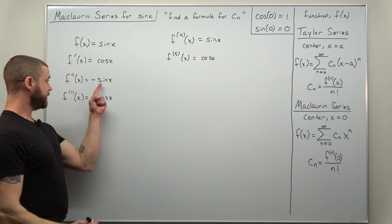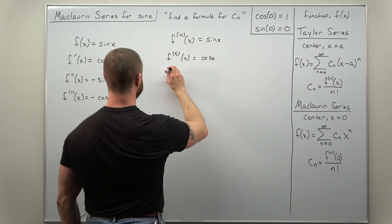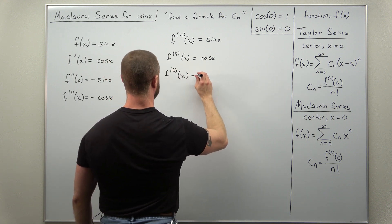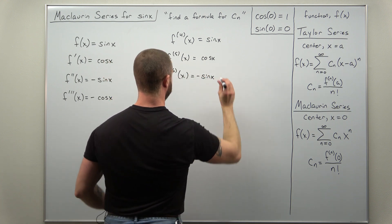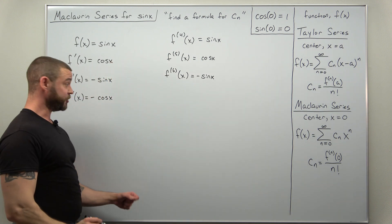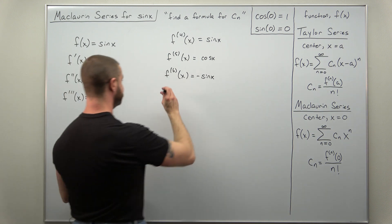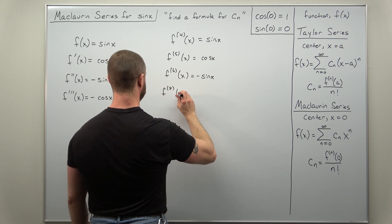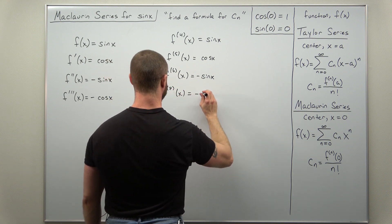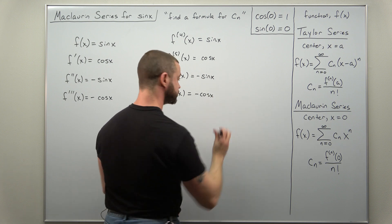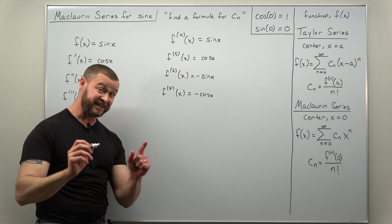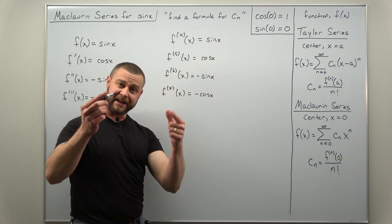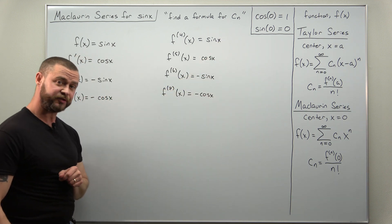Your sixth derivative is going to be negative sine of x, and then your seventh order derivative is going to be negative cosine of x. And if you were to differentiate this again to get the eighth order derivative, it just goes back — it cycles every four terms.